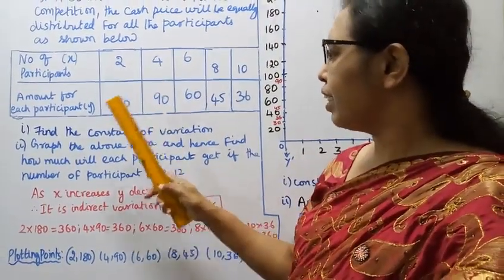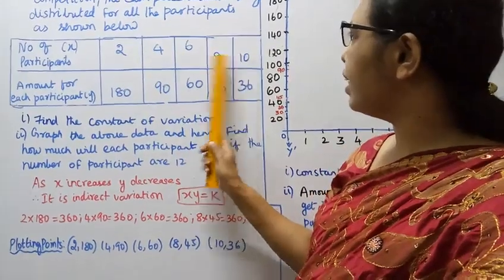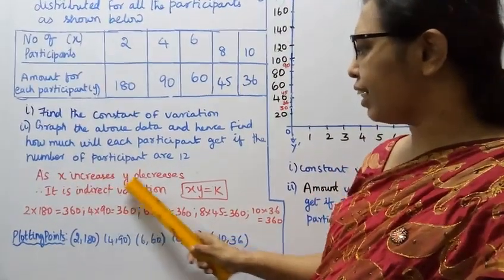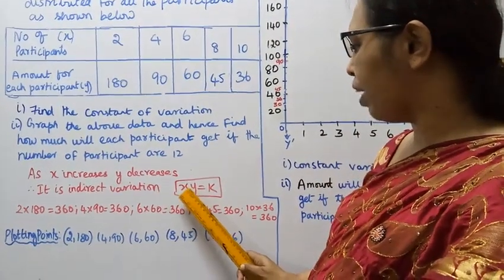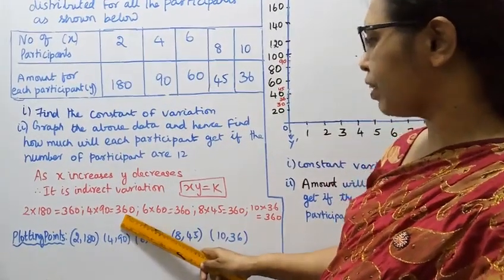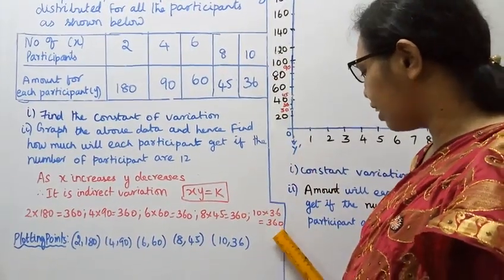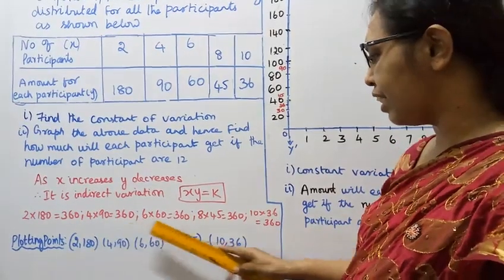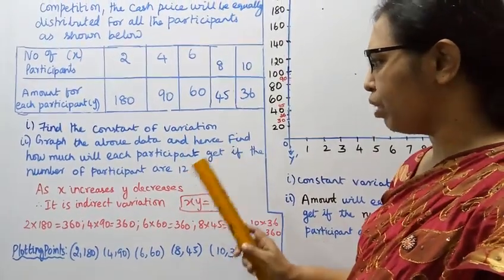Checking the products: 2 multiplied by 180 equals 360. 4 multiplied by 90 equals 360. 6 multiplied by 60 equals 360. 8 multiplied by 45 equals 360. 10 multiplied by 36 equals 360. All products equal 360. Therefore xy is equal to k, and the first answer is k equals 360.